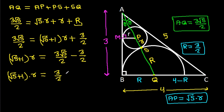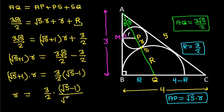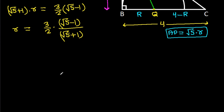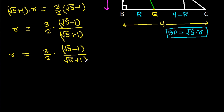Substituting capital R as 3 over 2: 3√5 over 2 minus 3 over 2 equals root 5 plus 1 times r. So root 5 plus 1 times r equals 3 over 2 times root 5 minus 1. Therefore r equals 3 over 2 times root 5 minus 1 over root 5 plus 1.